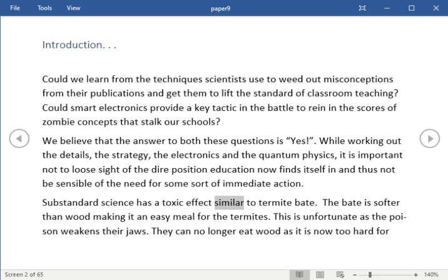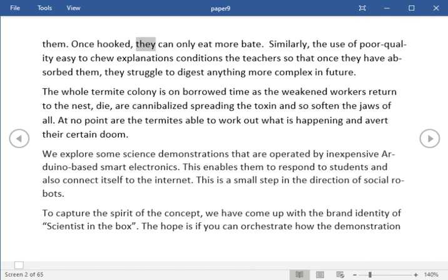Substandard science has a toxic effect similar to termite bait. The bait is softer than wood making it an easy meal for the termites. This is unfortunate as the poison weakens their jaws. They can no longer eat wood as it is now too hard for them. Once hooked, they can only eat more bait. Similarly, the use of poor quality easy to chew explanations conditions the teachers so that once they have absorbed them, they struggle to digest anything more complex in future. The whole termite colony is on borrowed time as the weakened workers return to the nest, die, are cannibalized spreading the toxin and so soften the jaws of all. At no point are the termites able to work out what is happening and avert their certain doom.